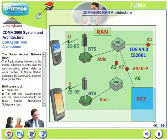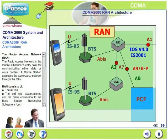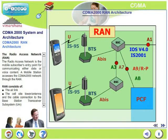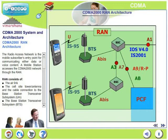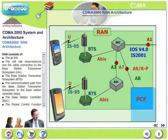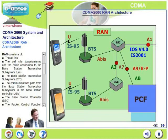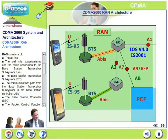Look at the new figure appearing on your screen. This is the Radio Access Network, RAN. RAN is a mobile subscriber's entry point for communicating either data or voice content. A mobile station accesses the CDMA 2000 network through the RAN. RAN consists of the air link, the cell site tower antenna, BTSs, BSC, packet control function, and the communication path between BTS and BSC.